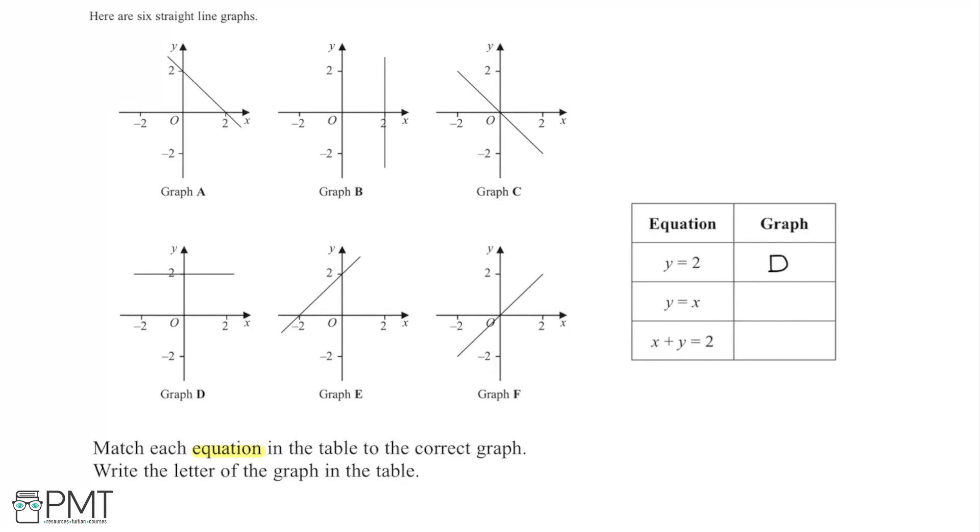Next, we have y = x. This basically means that whatever the value of y is, x has to be the same value. So if y is 0, x is 0. So we know the graph goes through the origin.